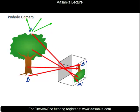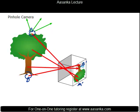You should be careful about the final image you get. The best approach is to take the two extreme points, draw the corresponding rays, and join them to get the image. Intermediate rays need not be drawn.